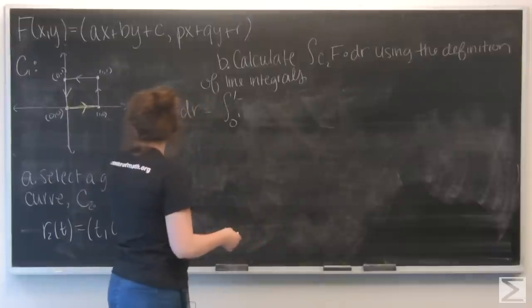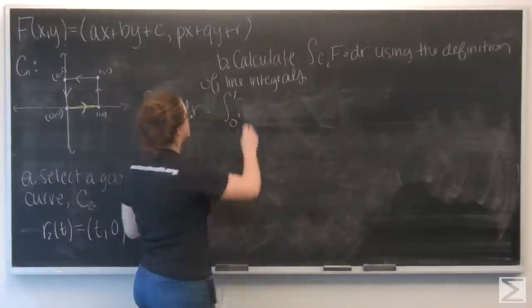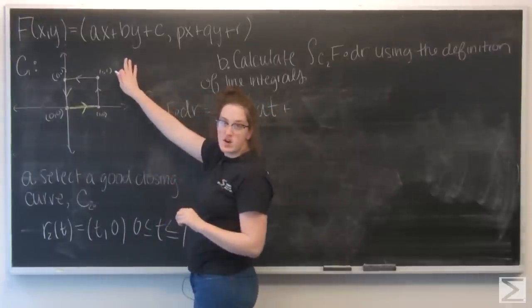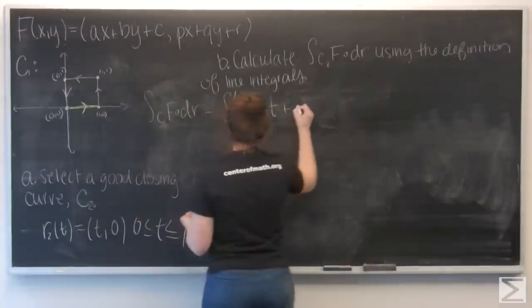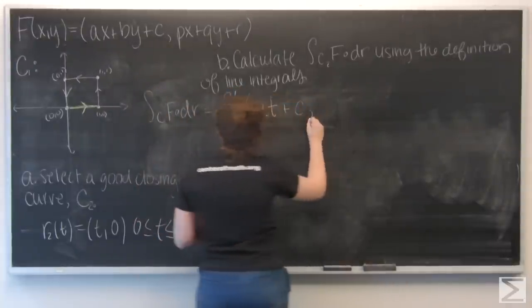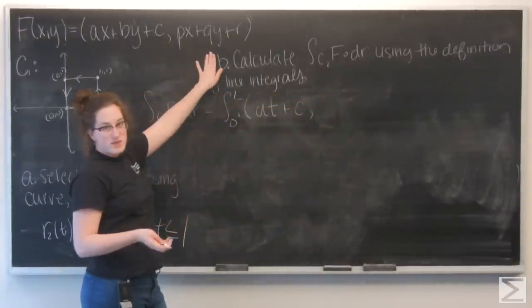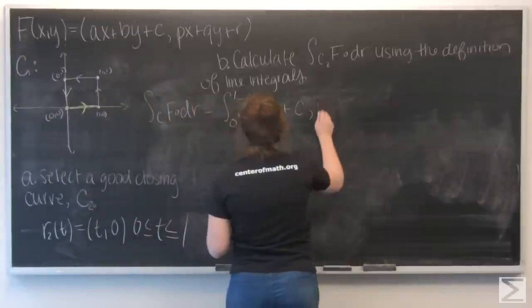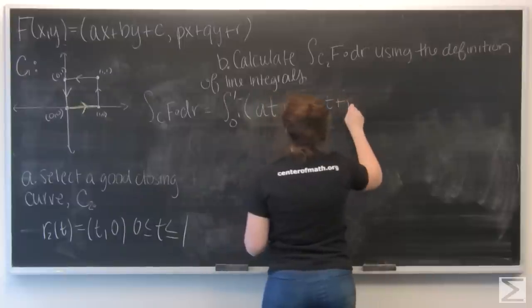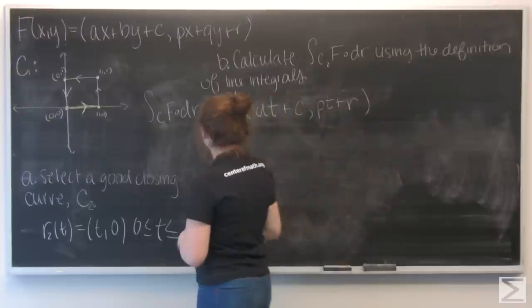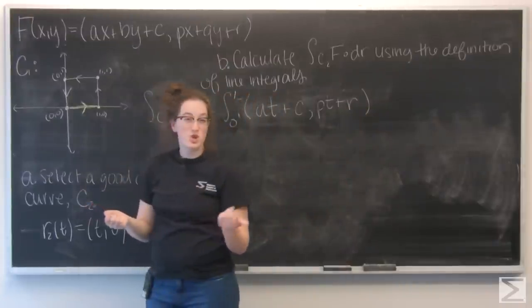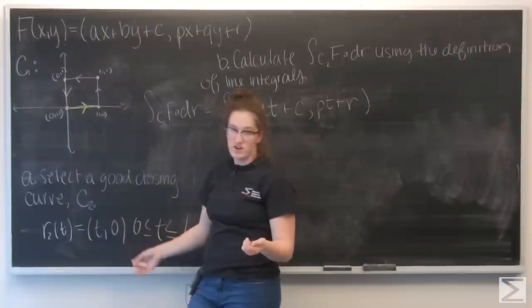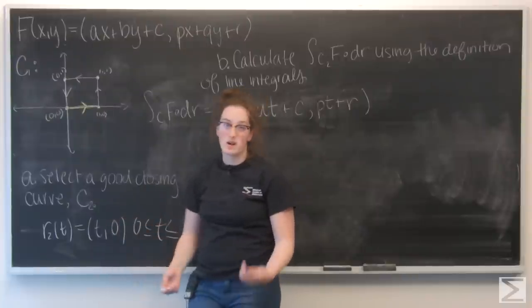I've got at plus b times 0, which is just 0, plus c. And then pt plus q times 0 plus r, so that's just pt plus r. And then I want to dot this with r prime of t. So that means taking the partial derivative with respect to t of each component in r2. So r prime is going to be (1, 0).